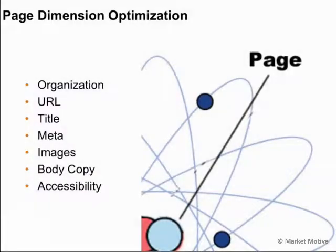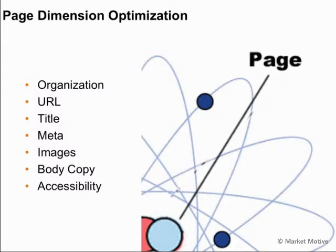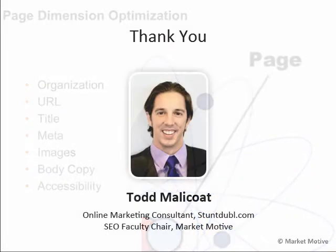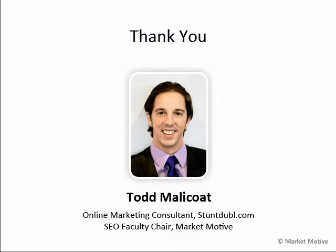So obviously this was a whirlwind of information to cover 20 signals in less than 10 minutes and talk about why these pages are optimized. We're going to individually dive into the organization of a page and website, the URL best practices, title, meta, and image best practices, body copy issues, and accessibility issues — each individually throughout the course of this series. I encourage you to go back and watch the 20 signals of an optimized page after you thoroughly understand each of these areas, to better understand why each of those signals helps the site rank for better search rankings. Thank you for joining me on part one. Enjoy part two.